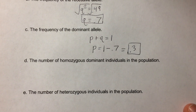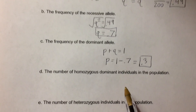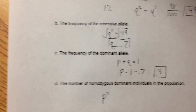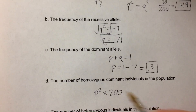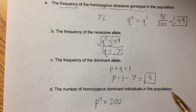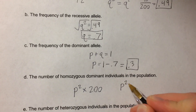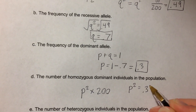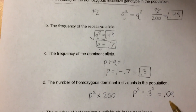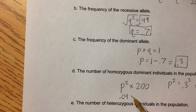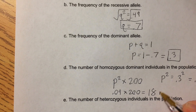D, the number of homozygous dominant individuals in the population. The number of homozygous dominant individuals is equal to the frequency of the homozygous dominant individuals times the total population. We can calculate the frequency of the homozygous dominant individuals by calculating P squared. Now that we've found P squared, we can plug it in and multiply it by the total number of individuals to get 18 rabbits.